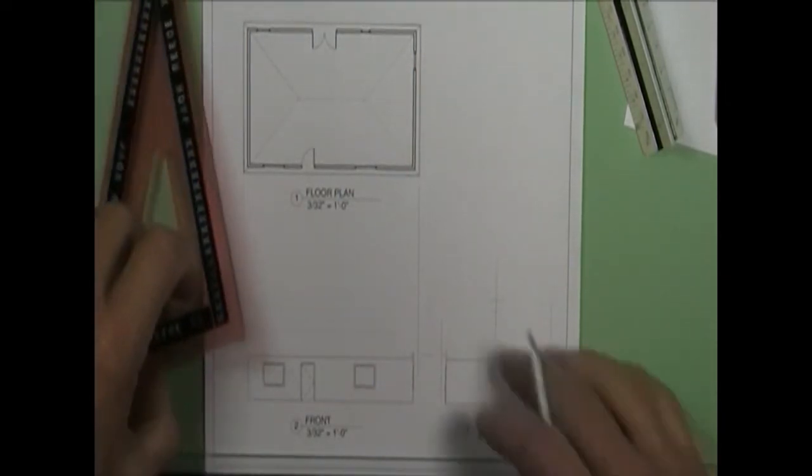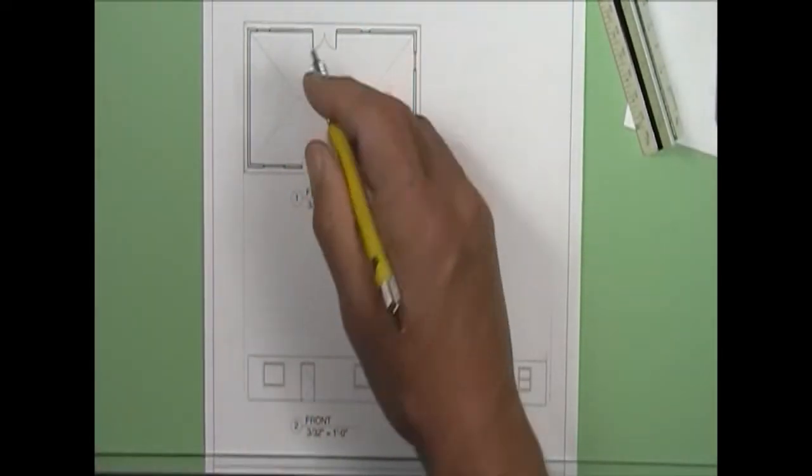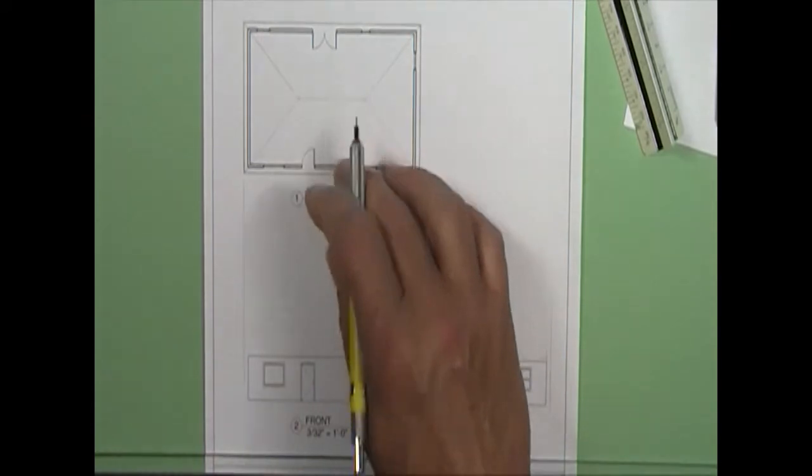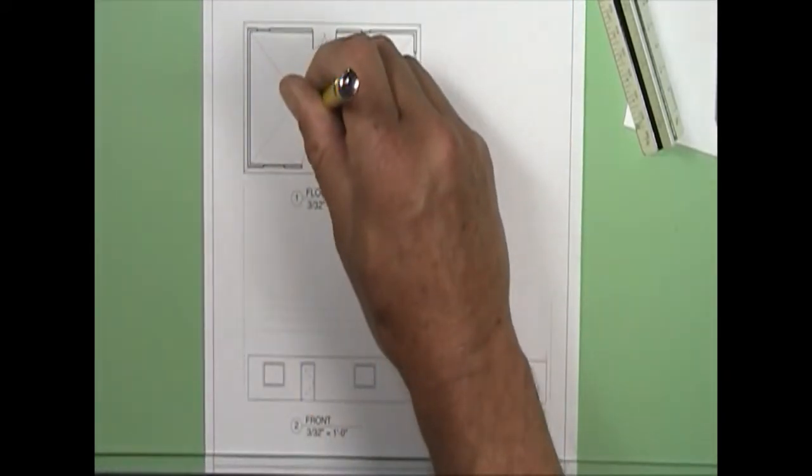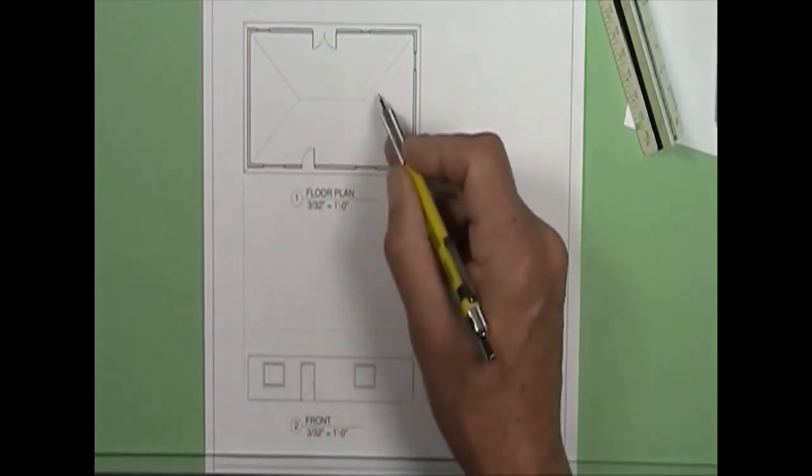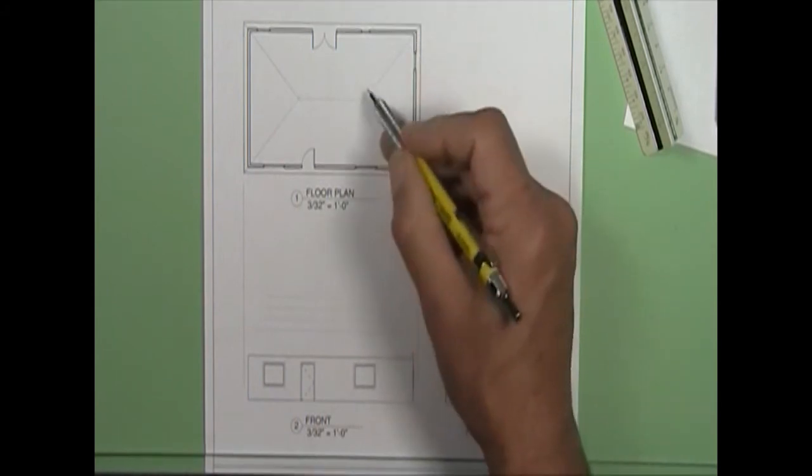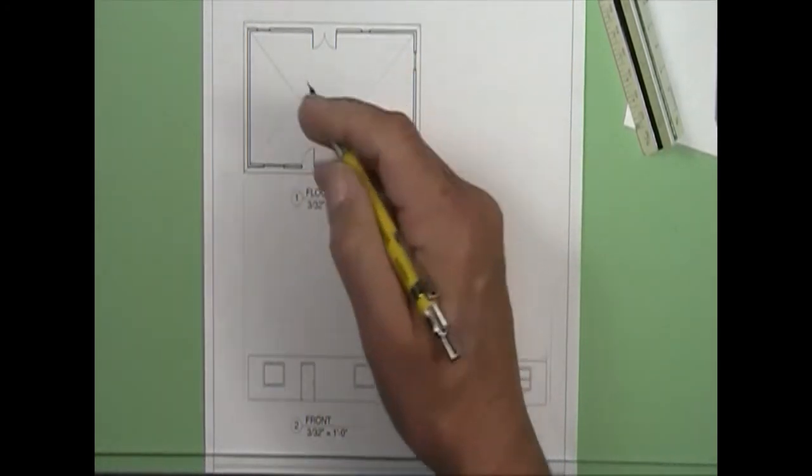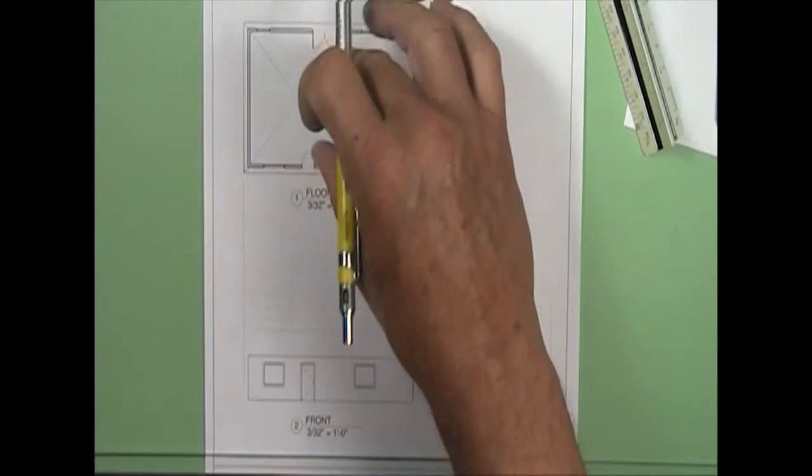Now, with the hip roof, it doesn't matter the slope of the roof. Looking down on it, the points are always the same. The intersection of the hips and the ridges, they're always the same. It doesn't matter what the slope is.